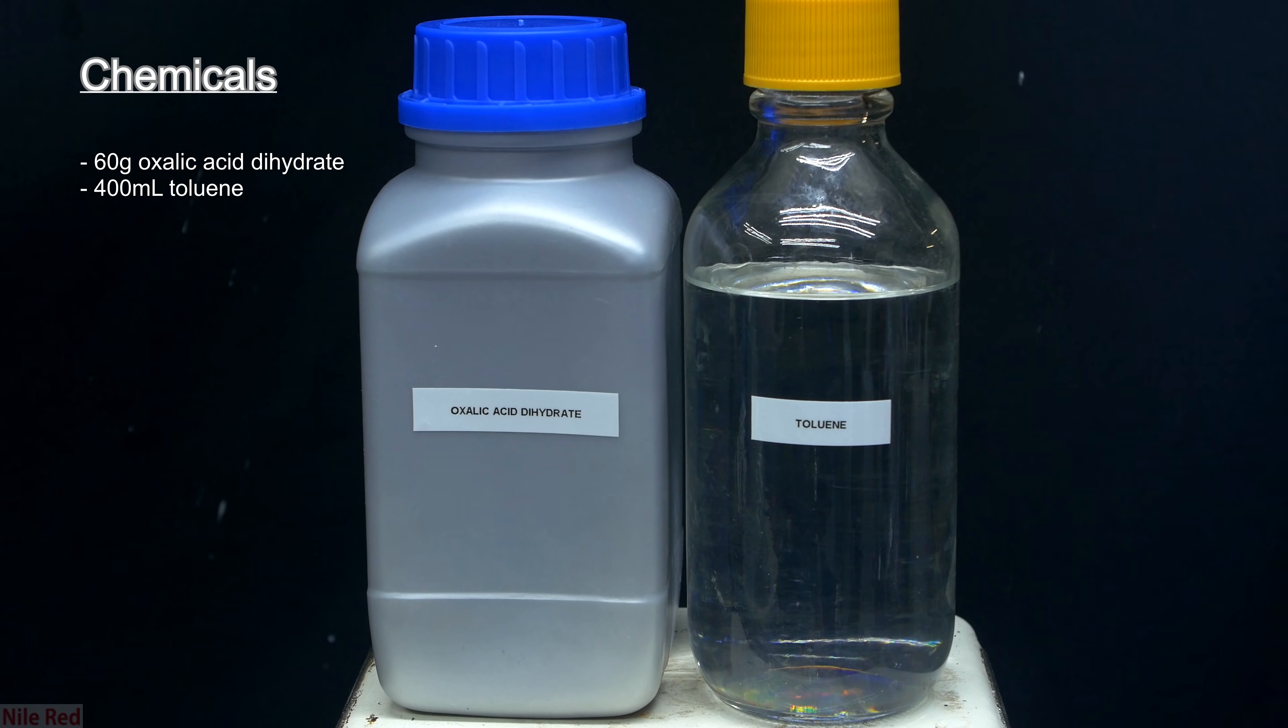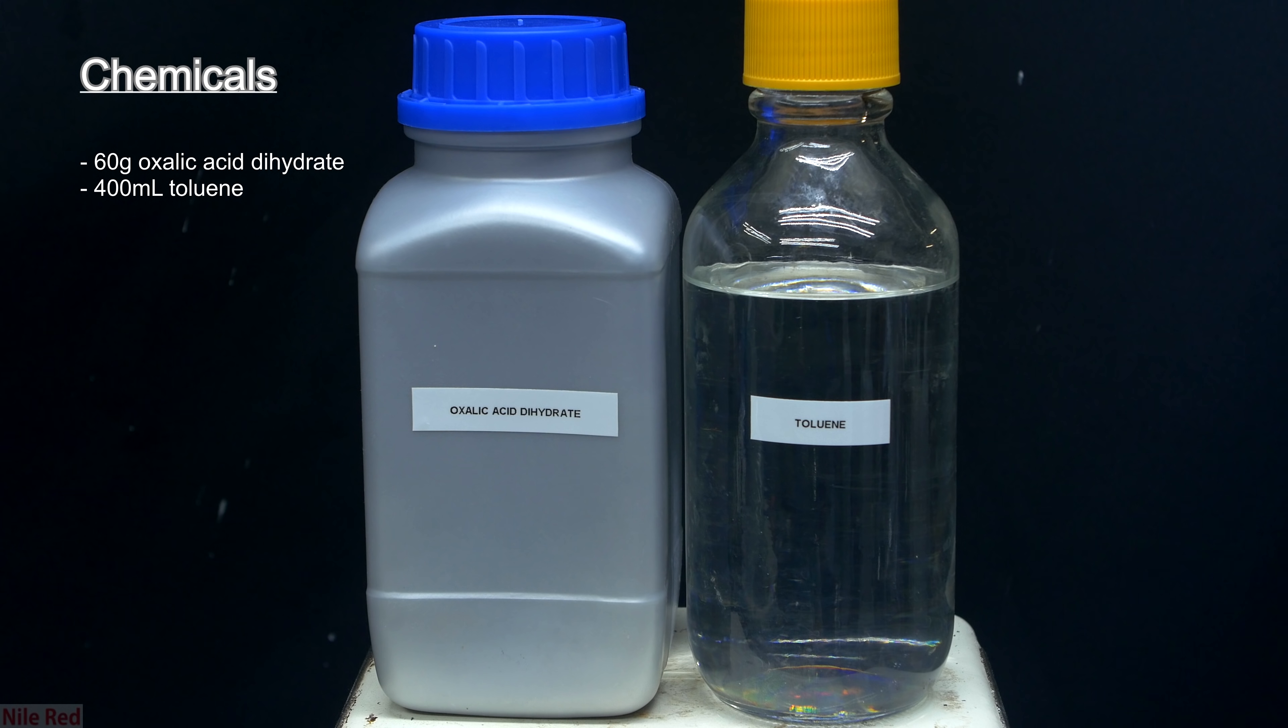Besides oxalic acid, the only other thing that we really need in terms of chemicals is some toluene. Toluene is a good solvent to use because it doesn't dissolve oxalic acid, but it forms an azeotrope with water. Basically a mixture of 80% toluene to 20% water by weight boils at around 20 degrees lower than pure water and about 30 degrees lower than pure toluene.